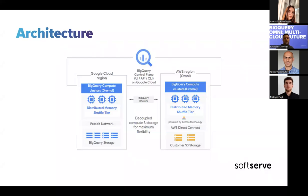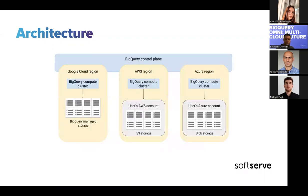The same architecture applies for Azure, so BigQuery Omni supports both Azure and AWS clouds. Query results are returned to Google Cloud over a secure connection and can be displayed in the Google Cloud console. Alternatively, you can write results directly to Amazon S3 storage or Azure Blob storage if you don't need those query results back on the GCP side, in which case there is no cross-cloud movement of query results.